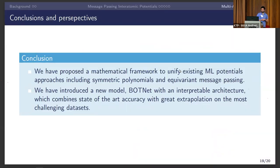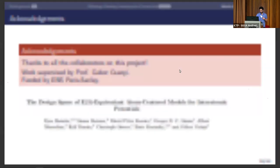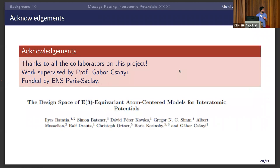In conclusion, we proposed a mathematical framework to unify most existing ML potential approaches, including symmetric potentials and equivariant message passing. We introduced Botnet, a new model with an interpretable architecture that combines state-of-the-art accuracy with strong extrapolation. This is joint work with the Gabor Chani group in Cambridge, the Boris Kozinsky group at Harvard, and Drautz and Christoph Ortner. A preprint will be available soon, and a longer talk covering more aspects of the framework will be given at the ACE seminar.